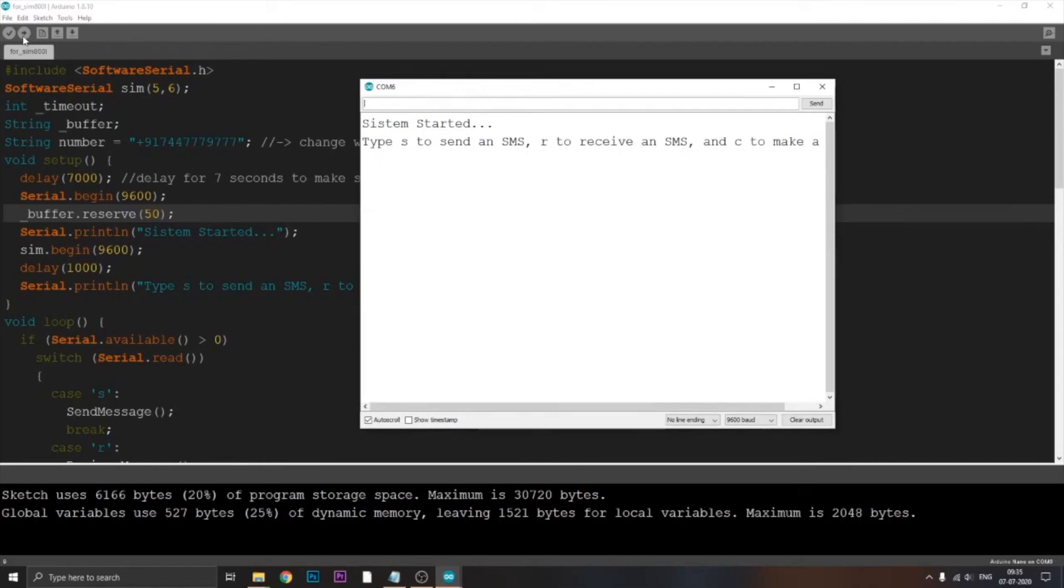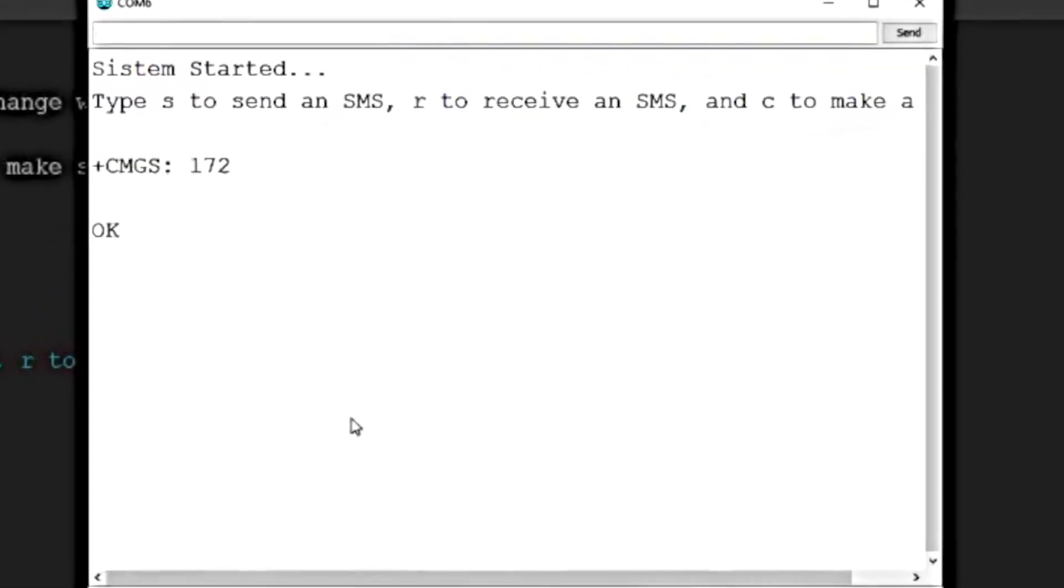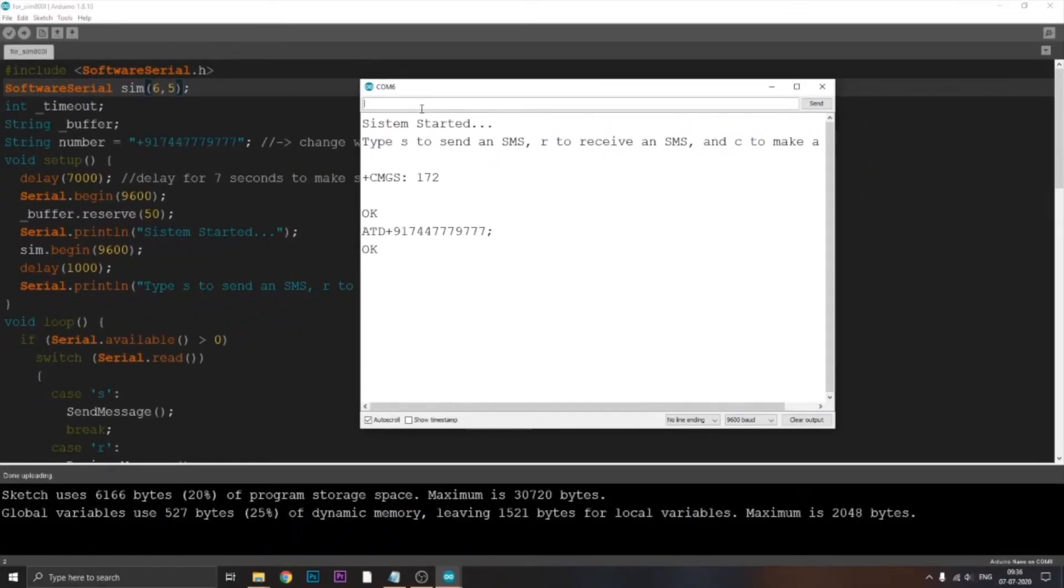Now just press S to send an SMS, R to receive an SMS, or C to call. One thing to remember is when you type S you need to have this CMGS message, and this specific text when you type the letter C in order to call.